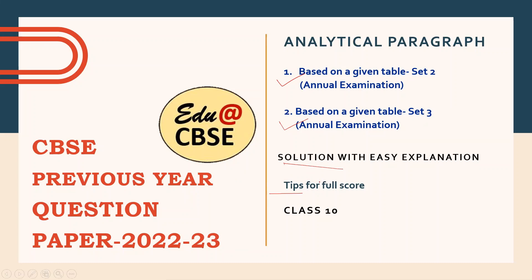CBSE has introduced different types of questions based on analytical paragraphs. It started with graphs like line graph, bar graph, pie chart, and then it introduced concept chart. After that, there was SWOT analysis. And this time in the sample paper released for 2023-24, there's another type of analytical paragraph in which you have to analyze a person — a candidature of a person for voting — whether you want to support or oppose it. So before voting, you have to analyze the person's characteristics. All these things are applicable in day-to-day life.